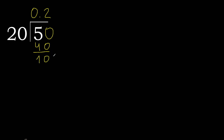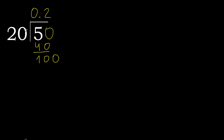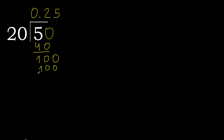Next — that is not a number, therefore complete. Always complete with 0. Point is here: 100. 20 multiplied by 5 is 100. 100 subtract 0 is 0, therefore finish.